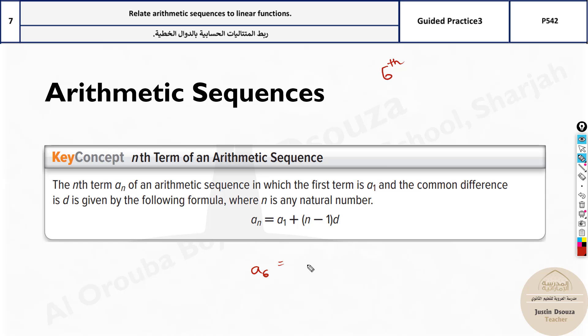You need to have the first term a1, and this will be 6 minus 1, and the common difference. You directly will get any term you want. You do not need to know the previous term or anything. You can jump to any term you want as long as you know the first term and the difference.